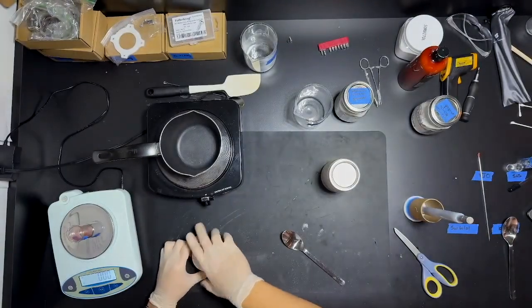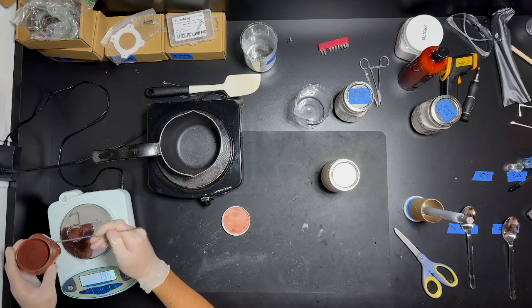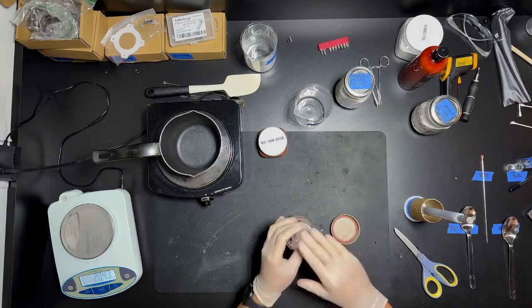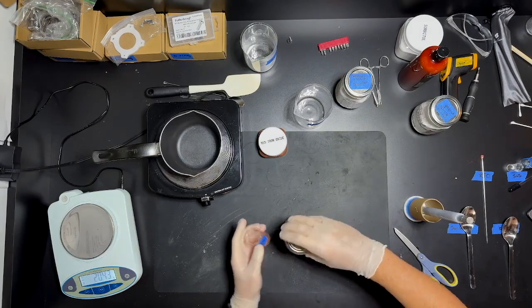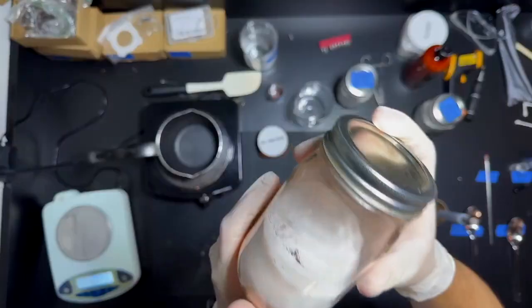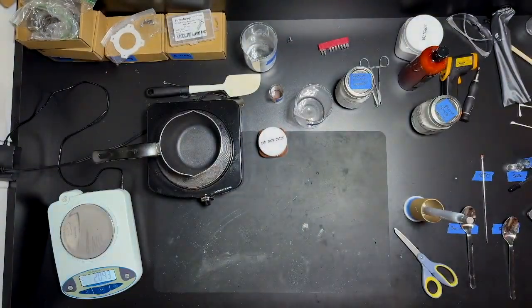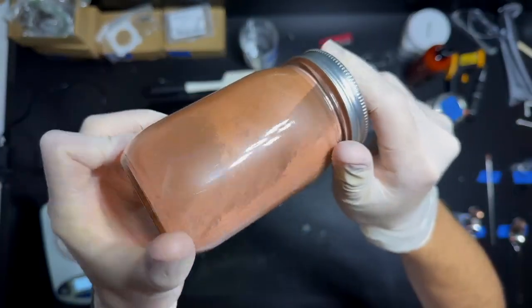Then last to the dry mix, I add the red iron oxide. This acts as a catalyst and speeds up the reaction of the burning of the propellant. Here's the final dry mix in a mason jar. And I need to shake this for very long to make sure everything's incorporated.